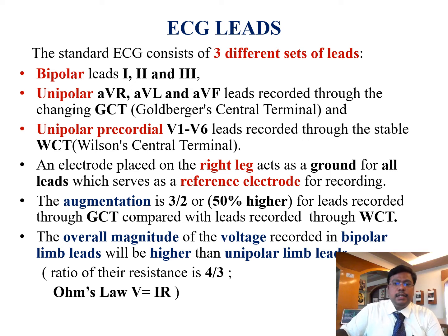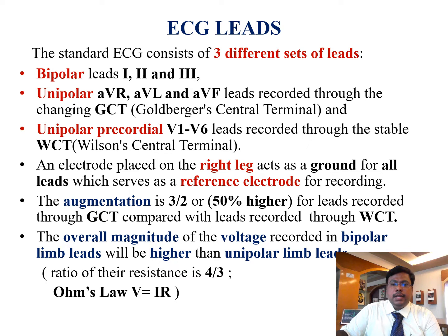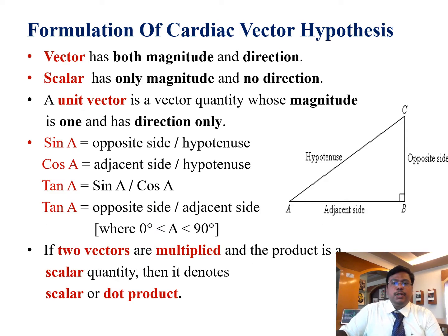ECG leads: the standard ECG leads consist of three different sets — bipolar leads one, two, three; unipolar AVR, AVL, and AVF recorded through the changing Goldberger center terminal; and unipolar precordial V1 to V6 recorded through the stable Wilson center terminal. An electrode placed on the right leg acts as the ground. The augmentation is three by two or fifty percent higher for leads recorded through the Goldberger center terminal compared with the Wilson center terminal. The overall magnitude recorded by bipolar limbs will be higher than unipolar limbs because of the difference in resistance ratio of four by three — applying Ohm's law, V equals IR.